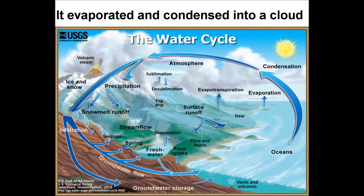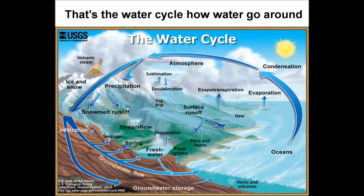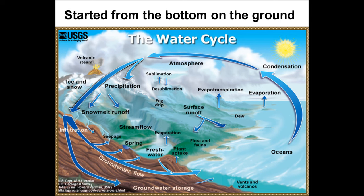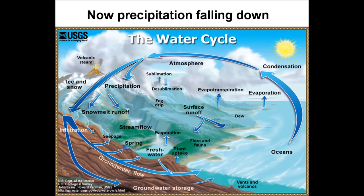Cause it started from the bottom on the ground, it evaporated and condensed into a cloud. Now precipitation falling down — that's the water cycle, how water go around.